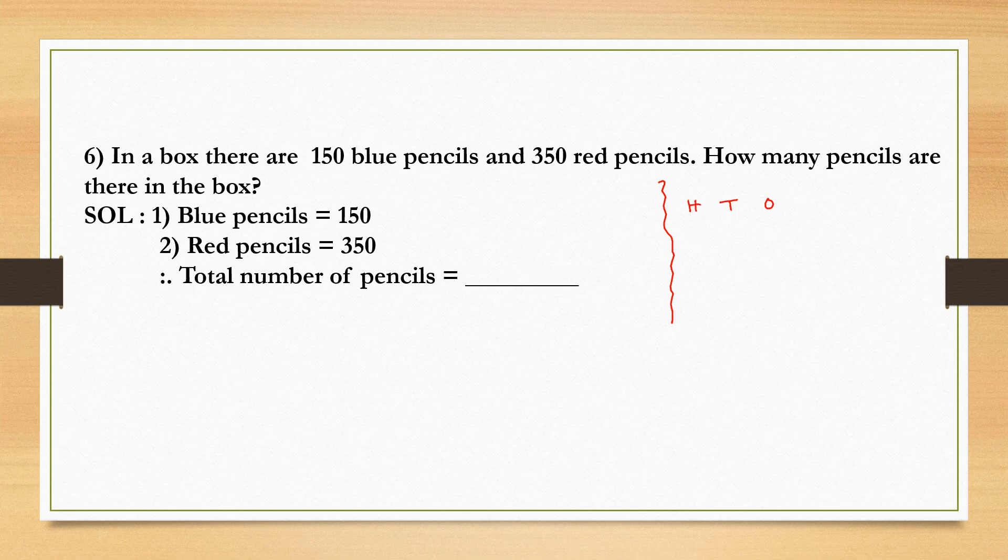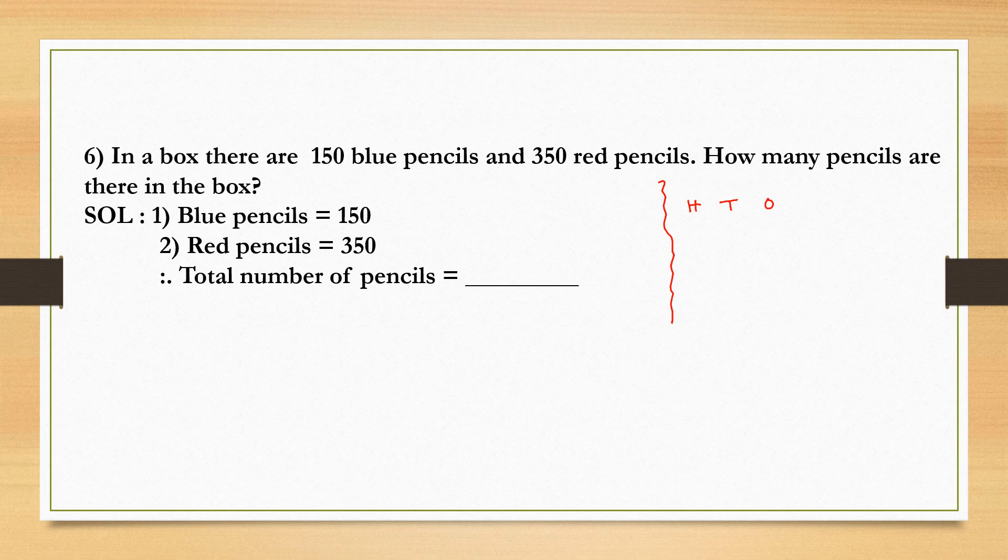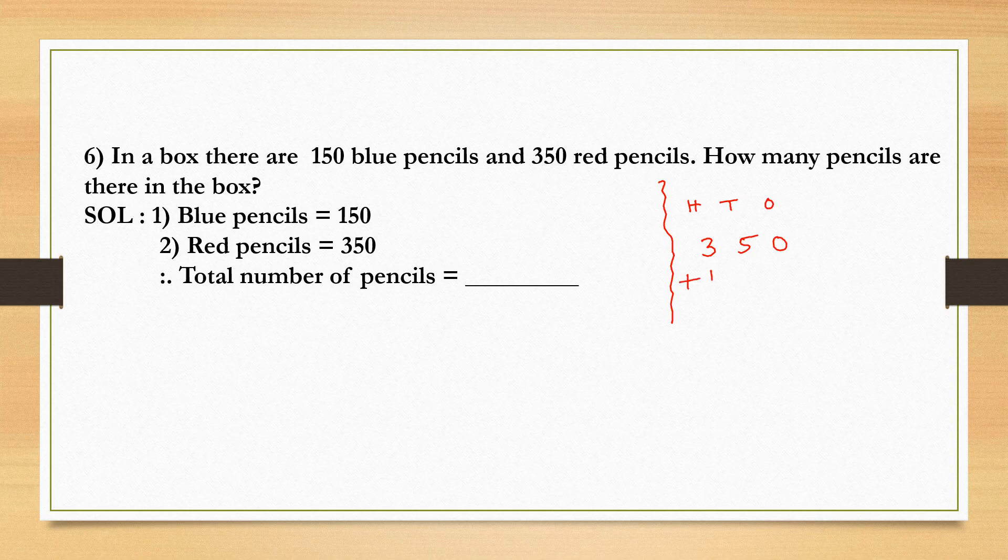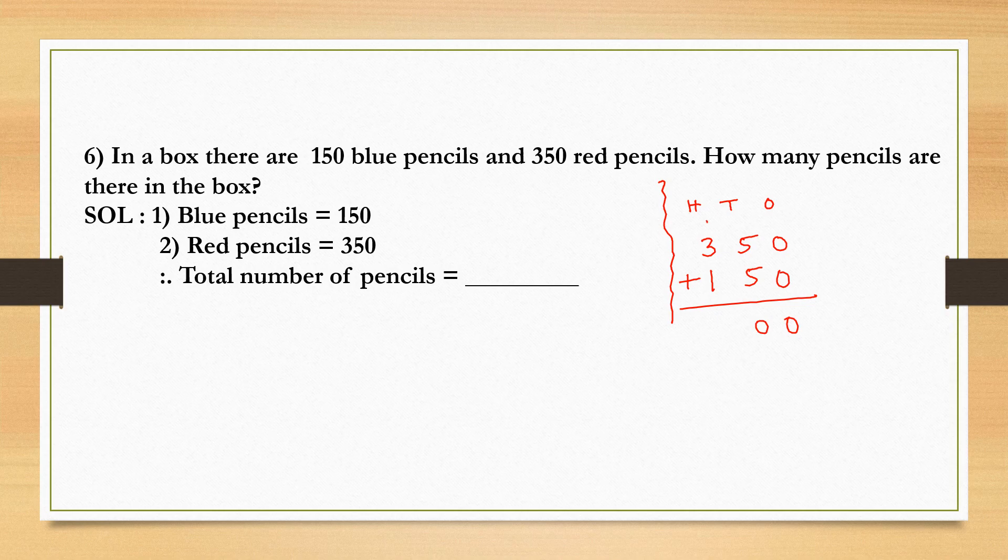What do you need to do, children? Find how many pencils are there in the box. So let's add 350 plus 150. So you get 5 plus 5 is 10, then 3, 4, 5. So total number of pencils equals to 500 pencils are there in the box.